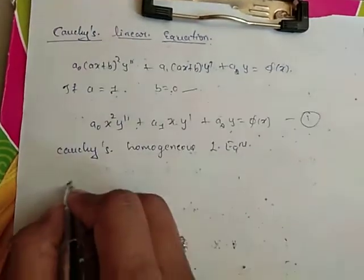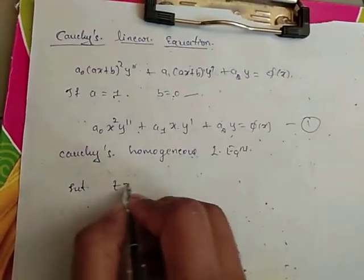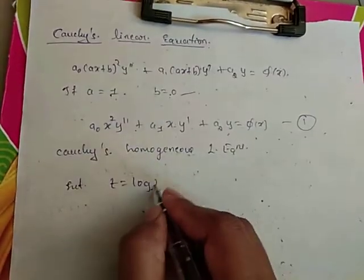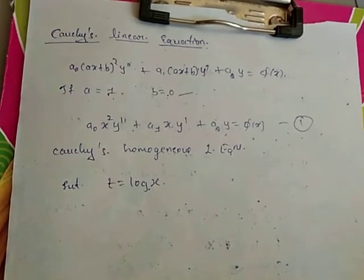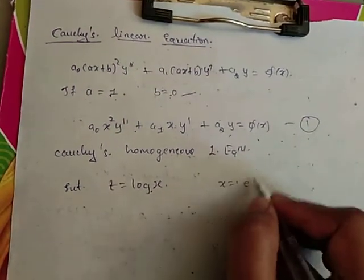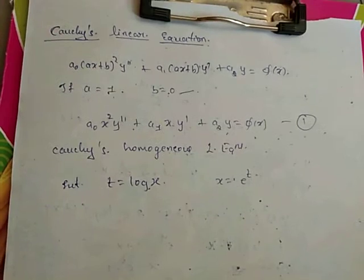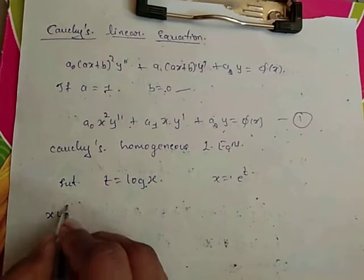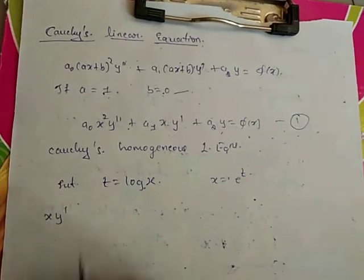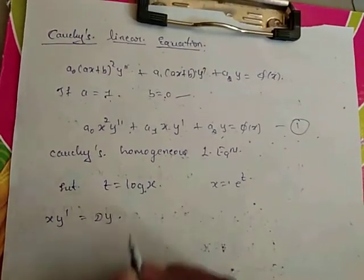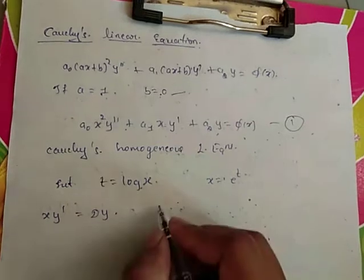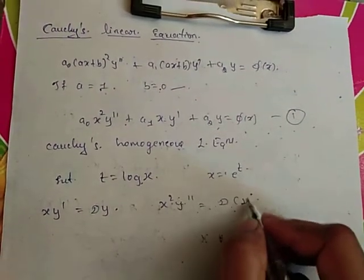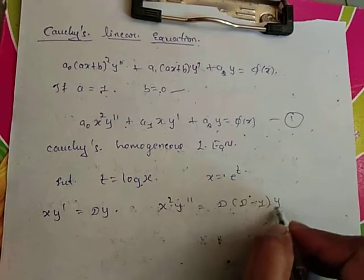Now we come to the substitution. Substitute T = log X, so X = e^T. We also assume the operator substitutions: X·Y' = DY, and X²·Y'' = D(D − 1)·Y, where D = d/dT.